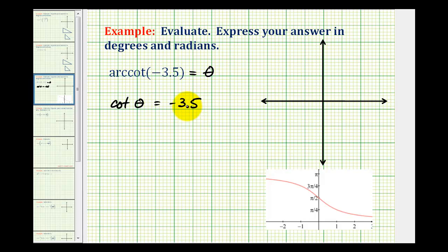There's an infinite number of angles that have a cotangent function value of negative 3.5, so we need to be aware of the output or range for the arc cotangent function. It's sketched here below in red. Notice the range or output would be on the open interval from zero to pi radians. So angle theta must be on the open interval from zero to pi radians.